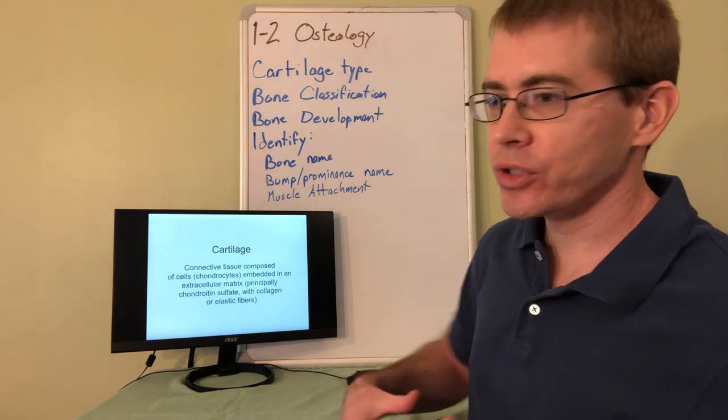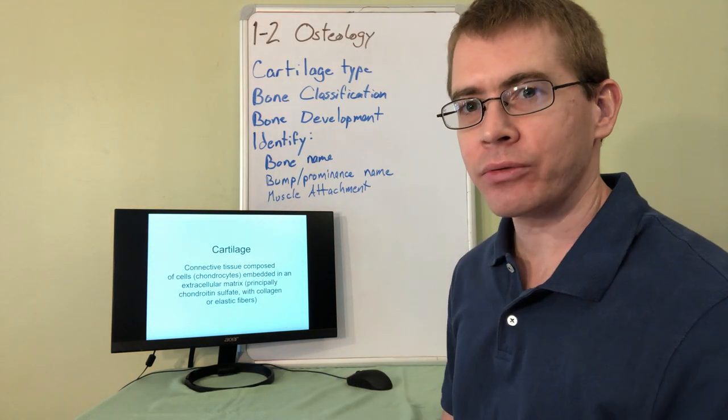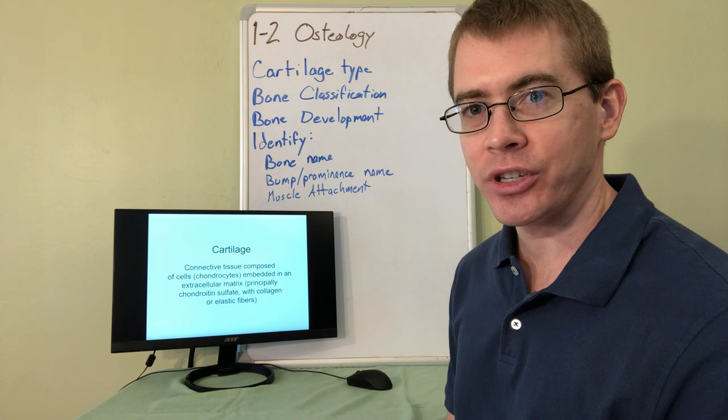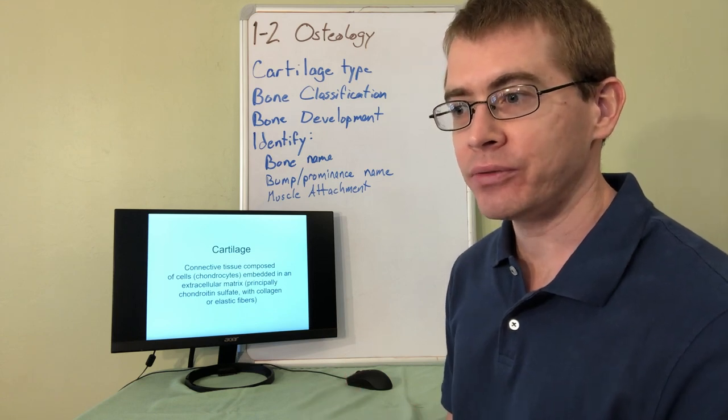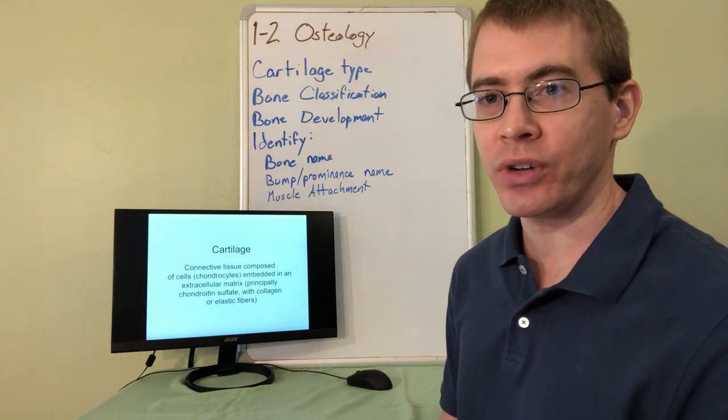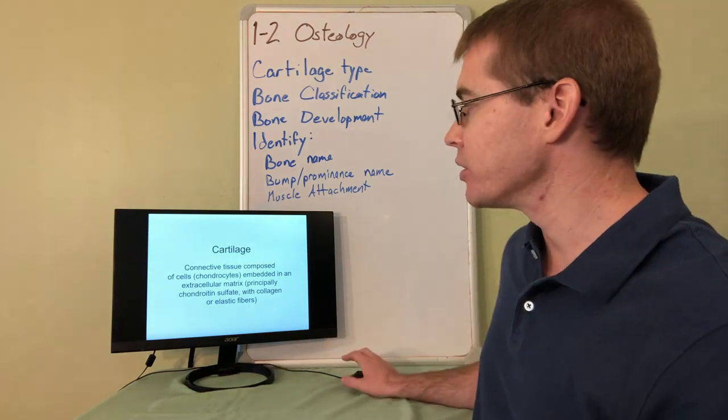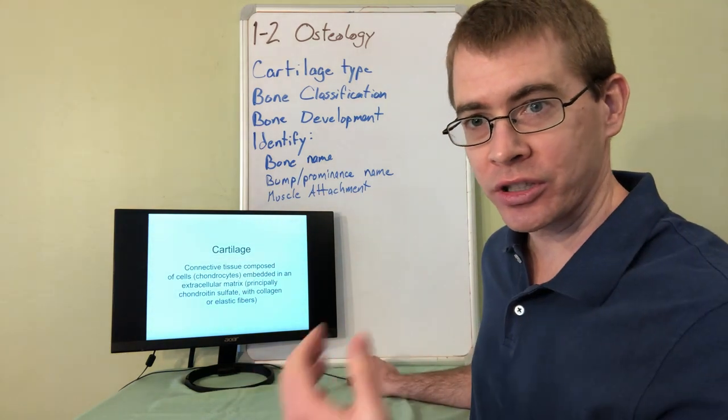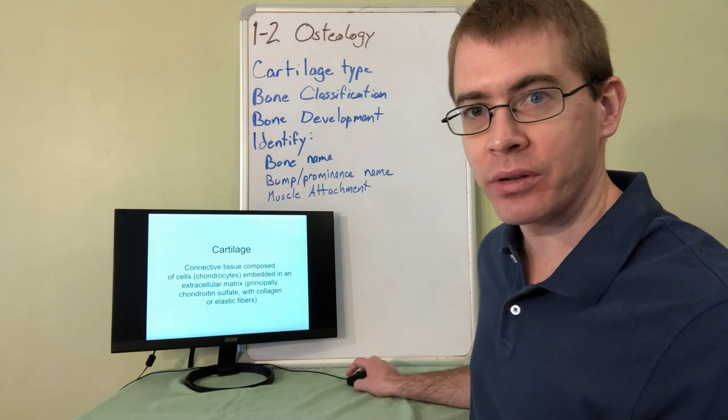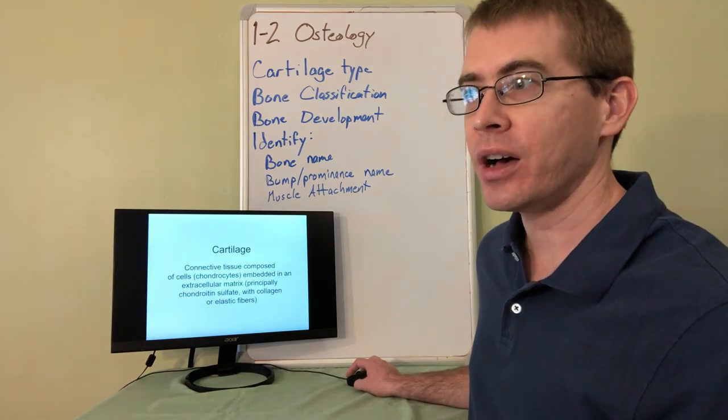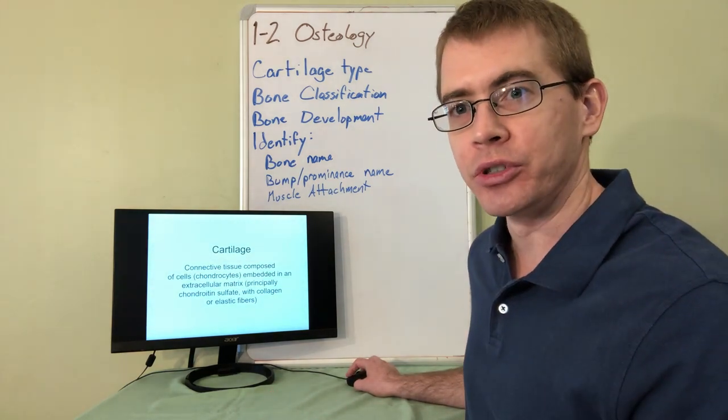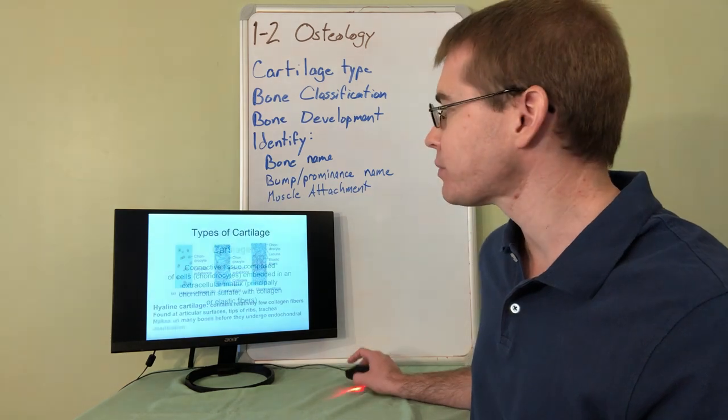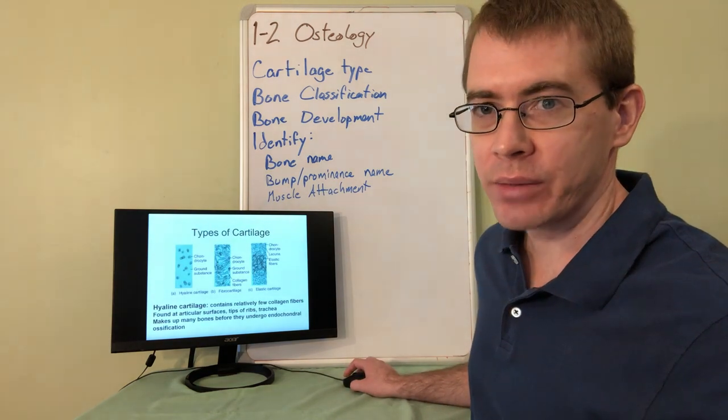So first of all, whenever we talk about bone, we have to realize bone is a type of connective tissue, and another related connective tissue that helps give bone its function is cartilage. So we're going to talk about cartilage and how cartilage actually forms bone. The developmental process of bone has an intermediate step through cartilage.